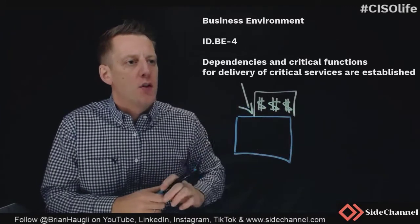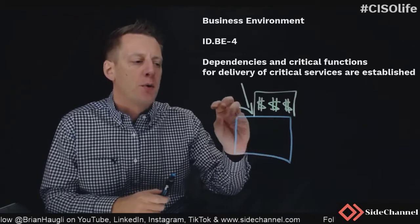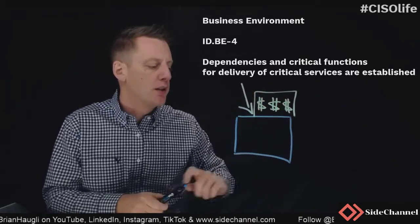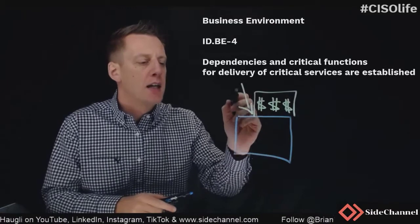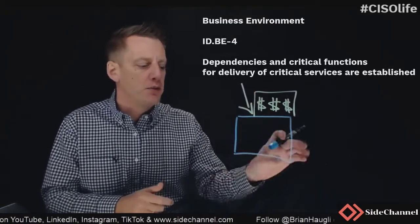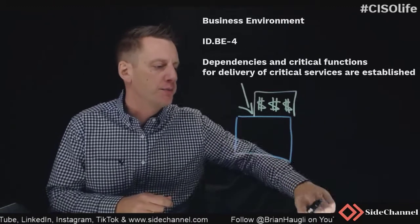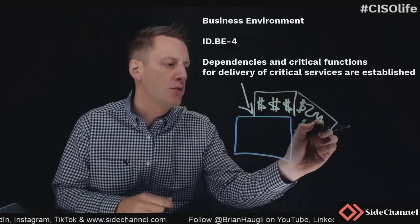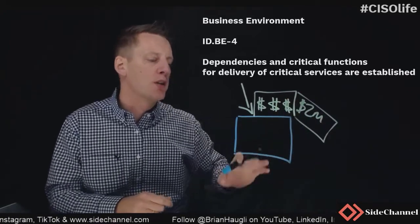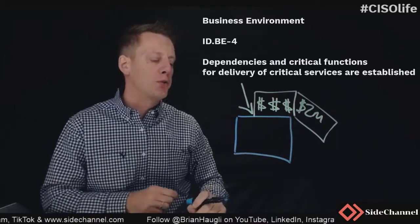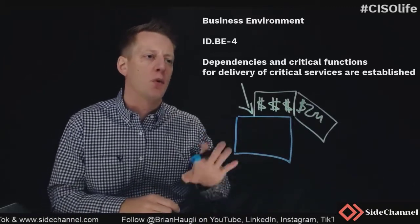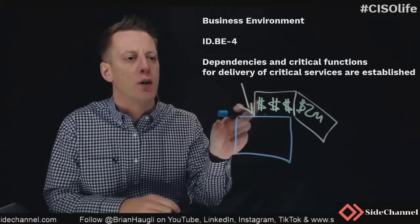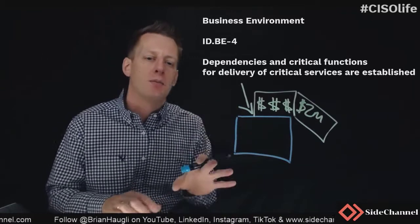Say you have an organization — part of your organization, a system, a business process — that is driving revenue. This business process, in our example, is making two million dollars a day, or a year, and you've said that it is so critical to your organization that it produces something north of 60 percent of your overall revenue.